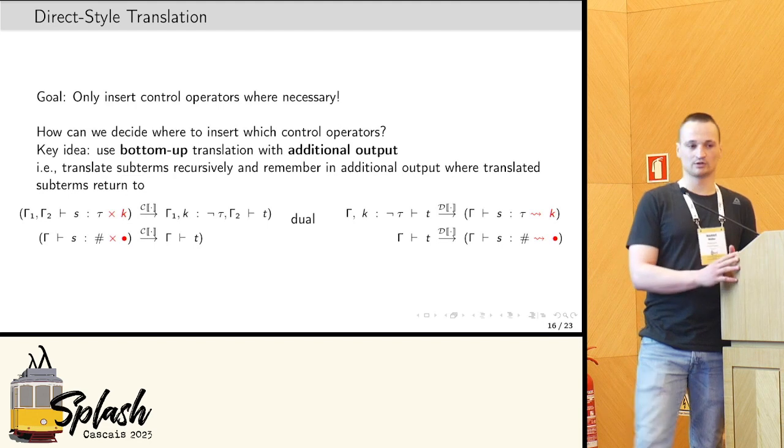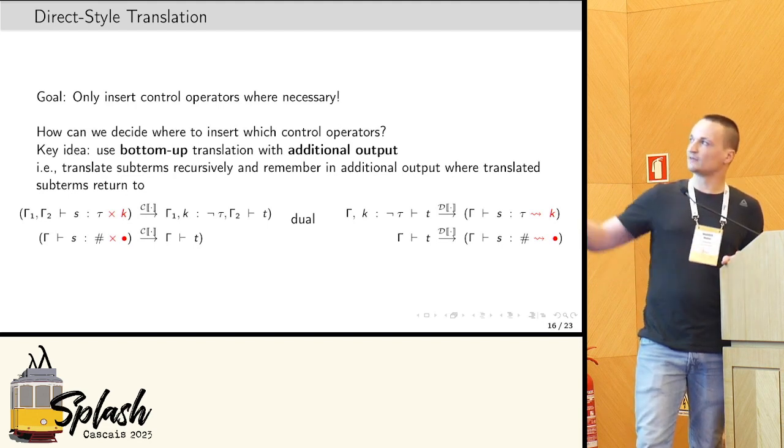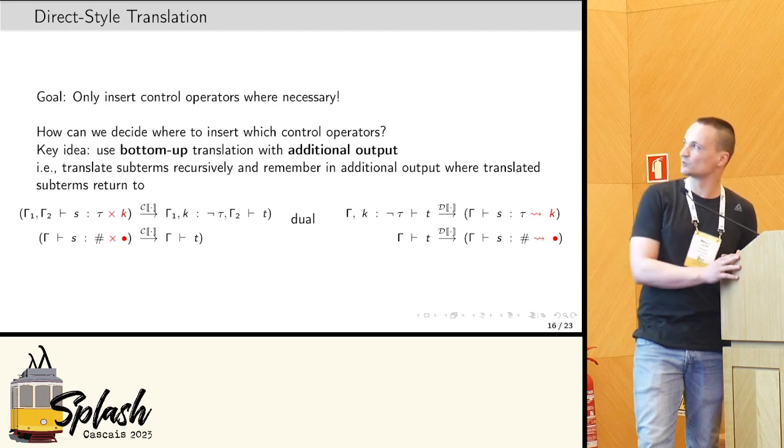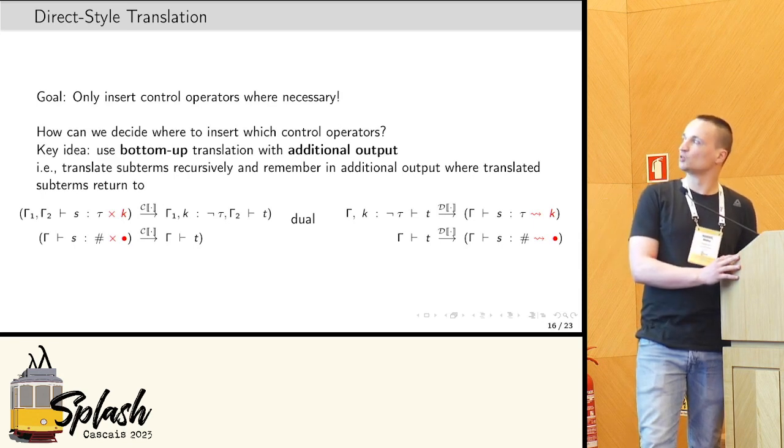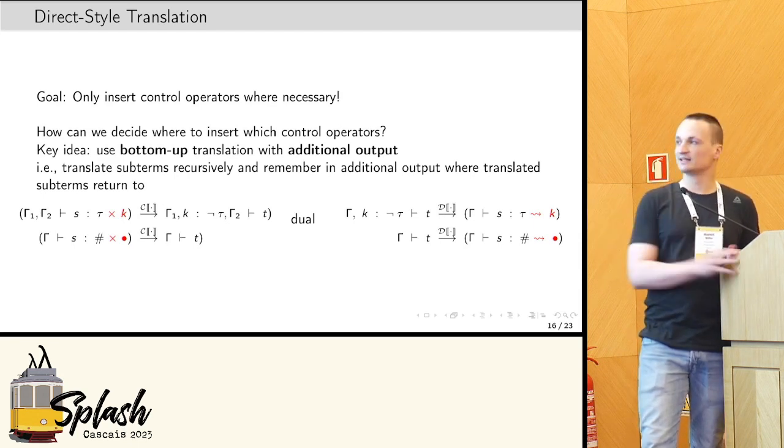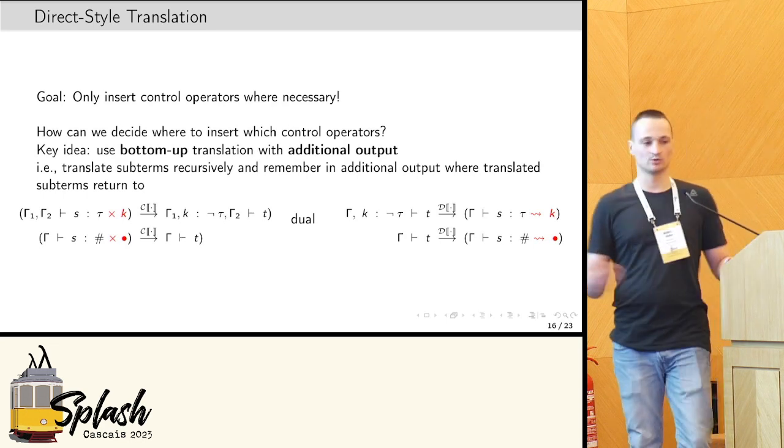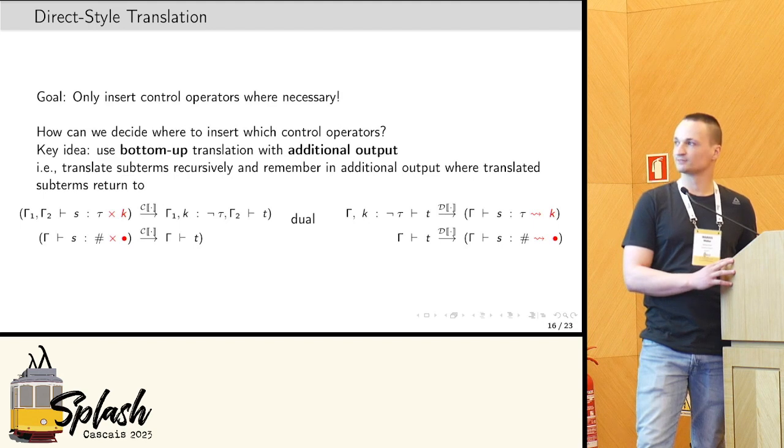And it's sort of dual to our direct style translation. So, this direct style translation is bottom-up, that is, we translate the subterms of a term recursively, and then remember in this additional output here, which is indicated with this quickly arrow here, to which continuation these translated subterms actually return. And based on that, we decide where to insert control operators.